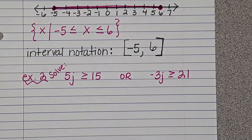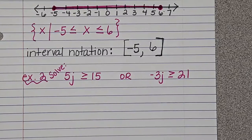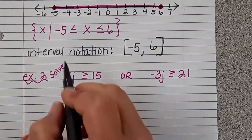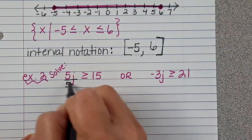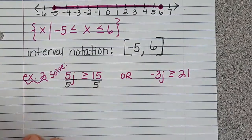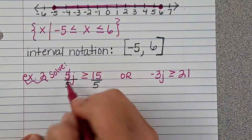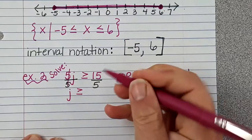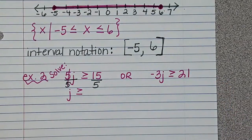So the first thing we need to do is solve them just like we normally do. So in order to solve this, what would I do? I'm going to divide by five. And 15 divided by five is three.